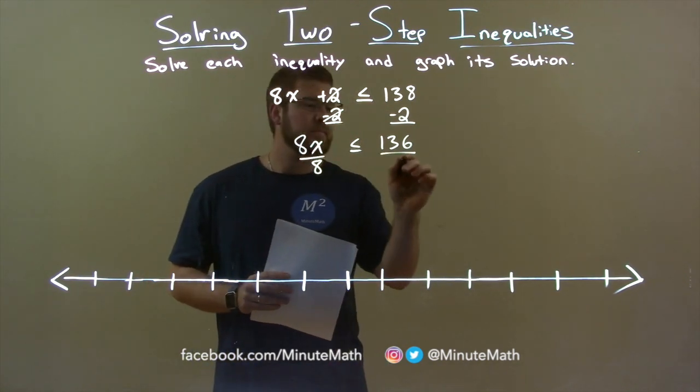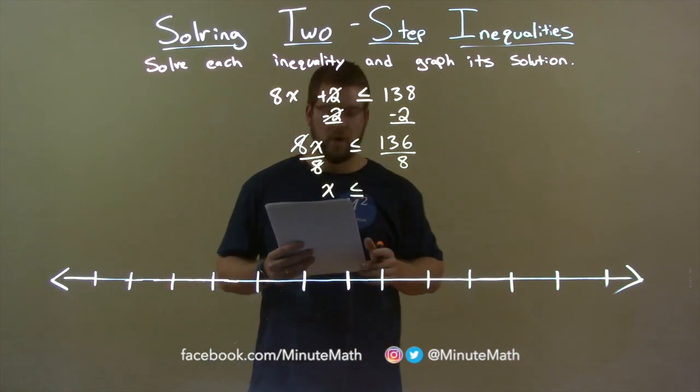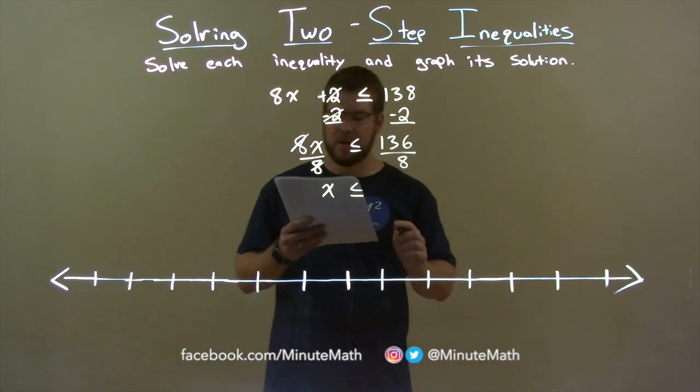Divide 8 to both sides. x is now by itself, is less than or equal to 136 divided by 8, which comes out to be 17.